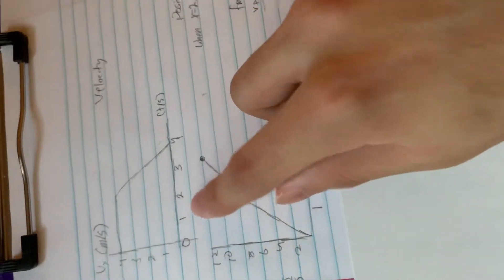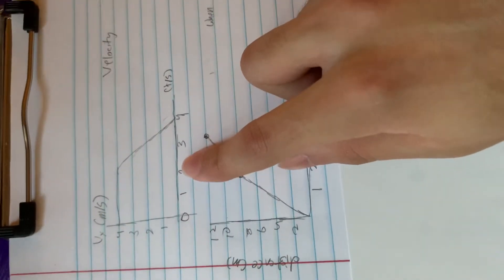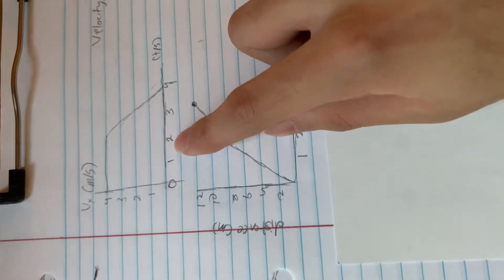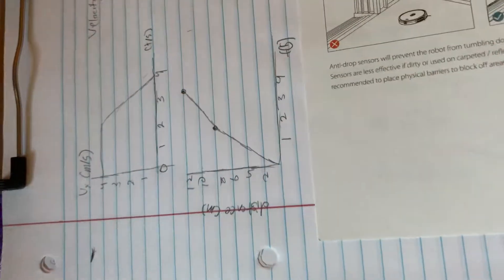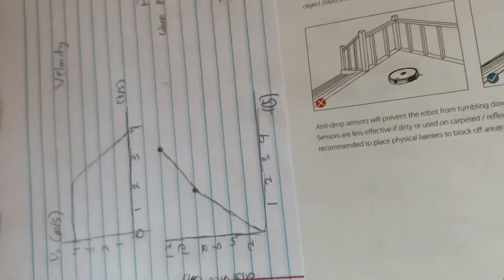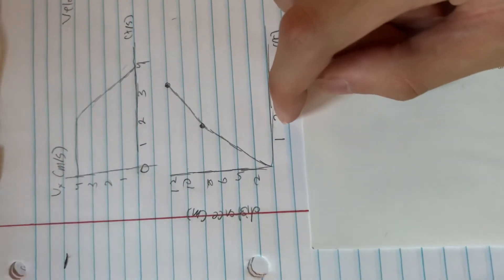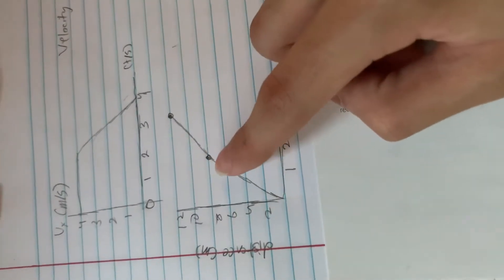As we can see, for t equals 0 to t equals 2, the velocity is 4 meters per second. So we can just simply multiply 2 times 4, and that would give us the position for when t equals 2, which would be at 8.